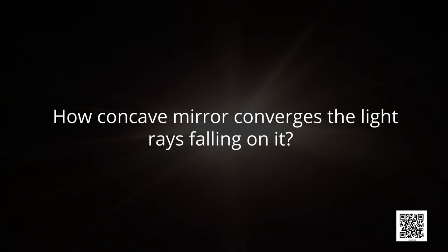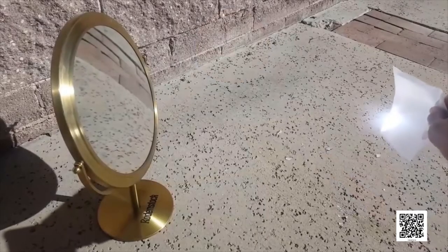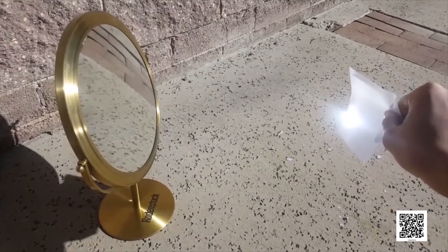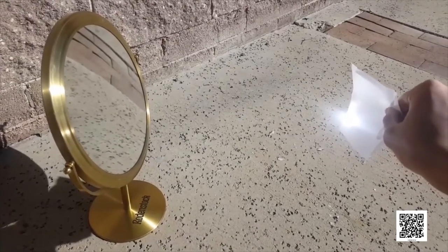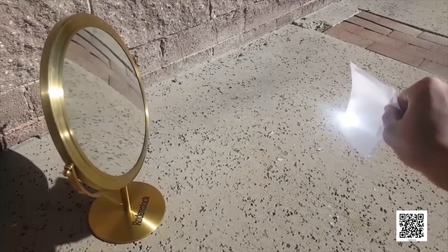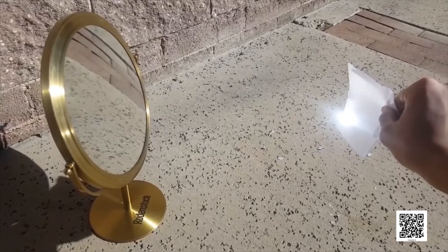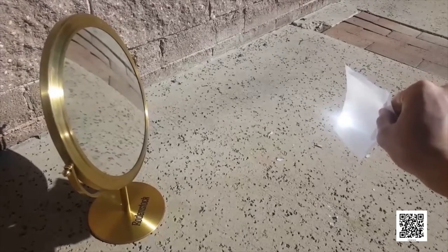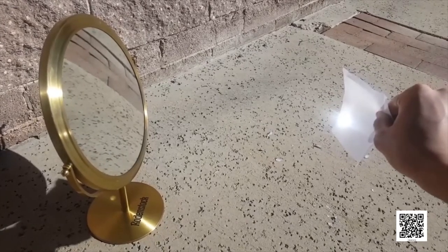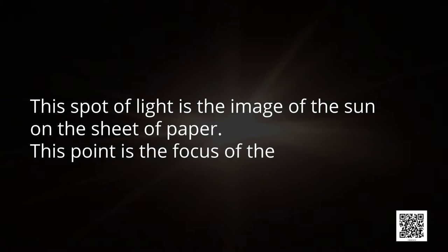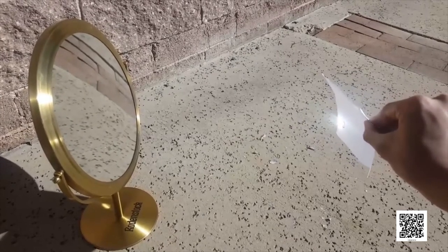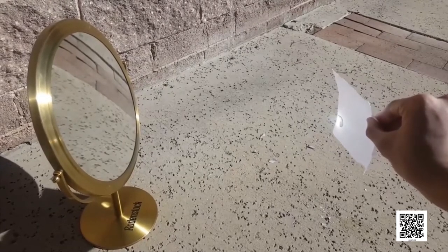Now let's see how a concave mirror converges the light rays falling on it. For this, we need a concave mirror and a paper. Hold the concave mirror and direct its reflecting surface towards the sun. Direct the light reflected by the mirror onto a sheet of paper and move it back and forth gradually until you find a bright, sharp spot of light on the paper. This spot of light is the image of the sun — this point is the focus of the concave mirror. You will observe that the paper starts burning due to the light rays of the sun.